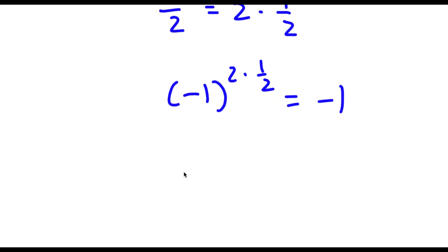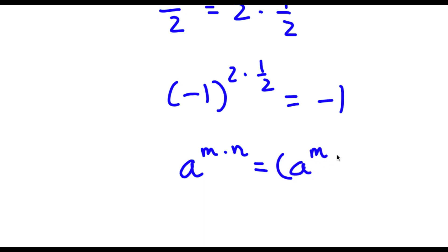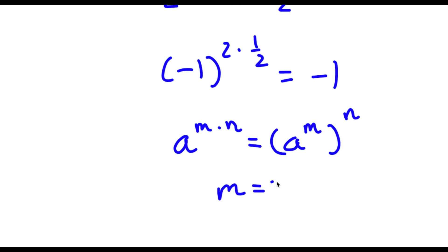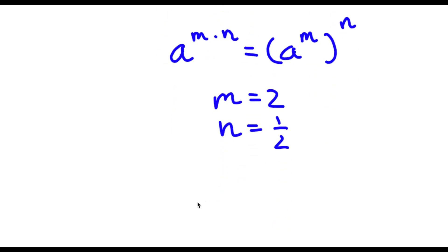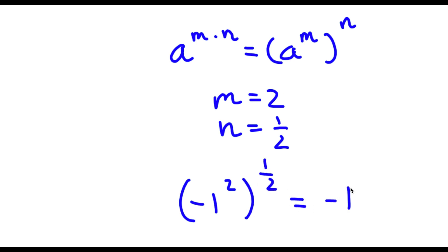Now, if I have something in the form a to the power of m times n, this is the same thing as a to the power of m, to the power of n. So in this case m is equal to 2 and n is equal to one-half. So now I have negative 1 to the power of 2, to the power of one-half, and this is equal to negative 1.